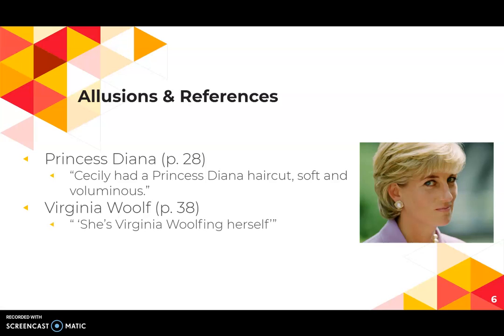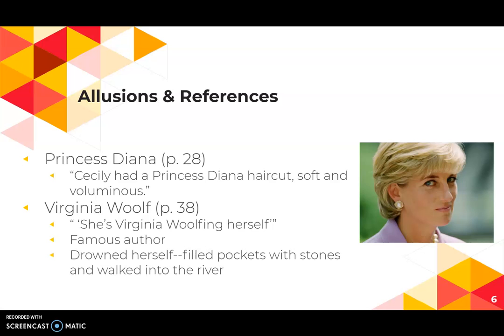Virginia Woolf also comes up — I believe when Fiona and her husband are at the beach and their daughter is walking into the ocean. They talk about how she's 'Virginia Wolfing herself,' and they say it kind of casually as a joke. Virginia Woolf was a famous author who drowned herself by filling her pockets with stones and walking into a river. To have that joke about your daughter is really insightful about Fiona's relationship with her daughter and the disconnect there, but also important to consider what tendencies toward self-destruction or risk-taking her daughter may have.